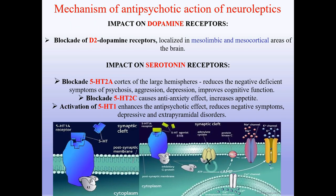Mechanism of antipsychotic action of neuroleptics. First, impact on dopamine receptors: blockade of D2 dopamine receptors localized in mesolimbic and mesocortical areas of the brain. Second, impact on serotonin receptors: blockade of 5-HT2A in the cortex of the large hemispheres reduces the negative deficient symptoms of psychosis, aggression, and depression, and improves cognitive functions. Blockade of 5-HT2C causes an anti-anxiety effect and increases appetite. Activation of 5-HT1 enhances the antipsychotic effect and reduces negative symptoms, depressive and extrapyramidal disorders.